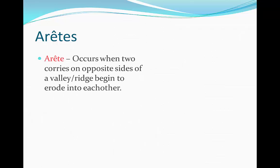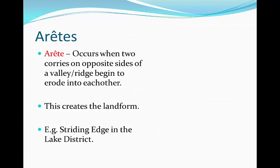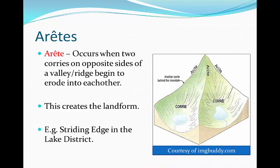Arêtes. An arête occurs when two corries on opposite sides of a valley, or a ridge, begin to erode into each other. It creates the landform we know as an arête. For example, Striding Edge in the Lake District.